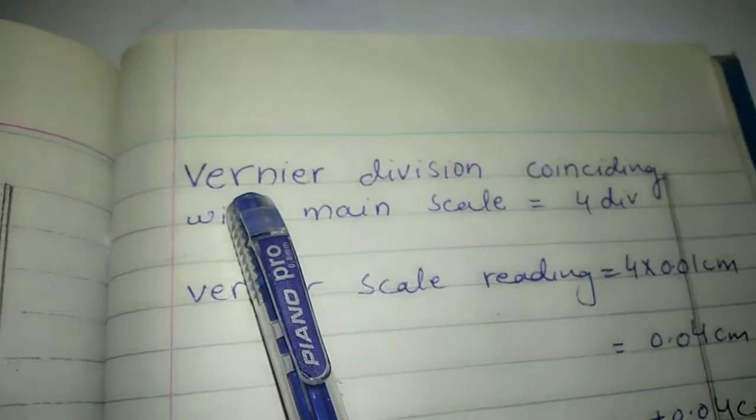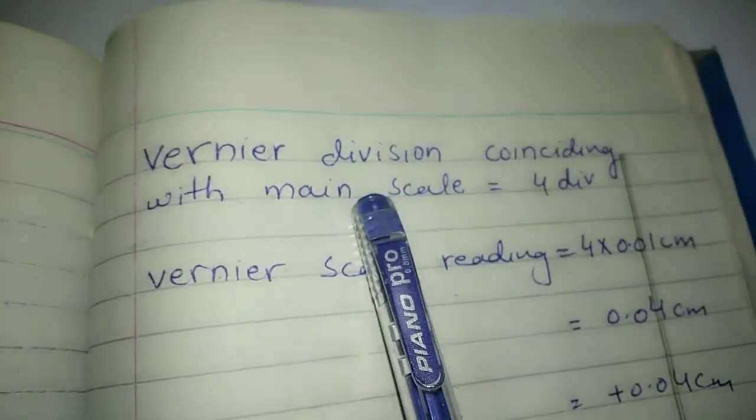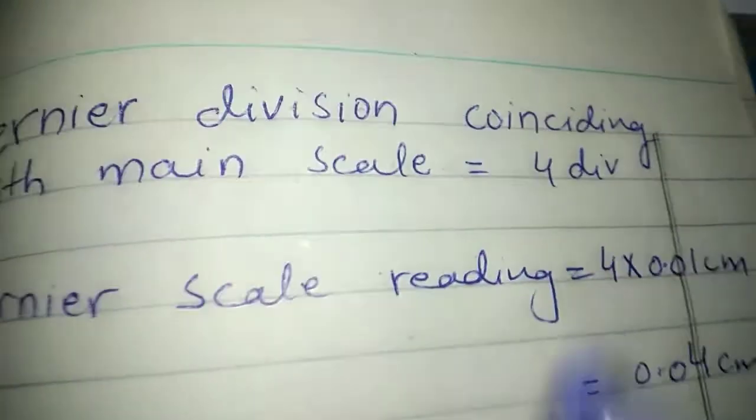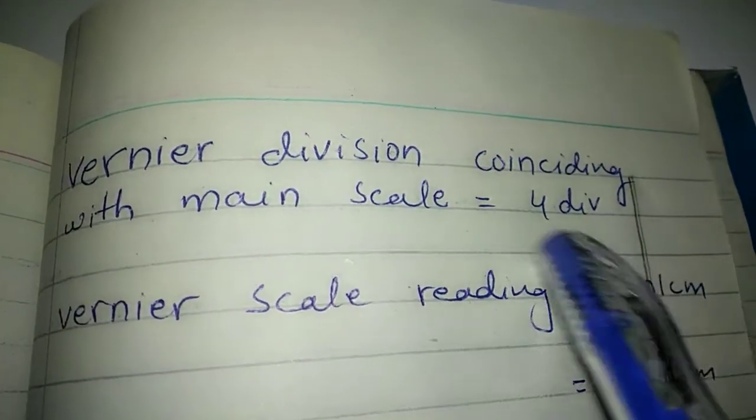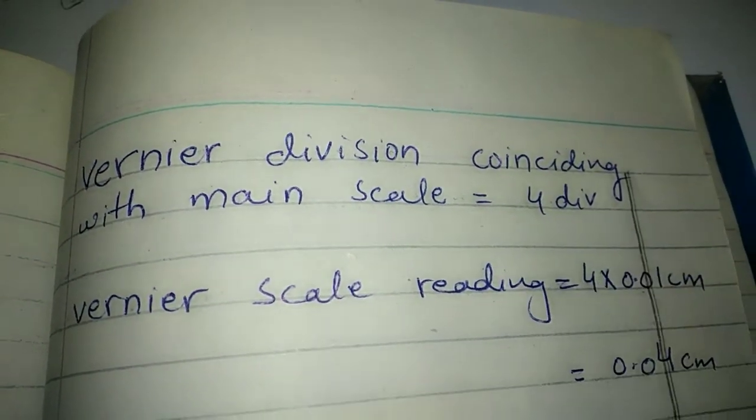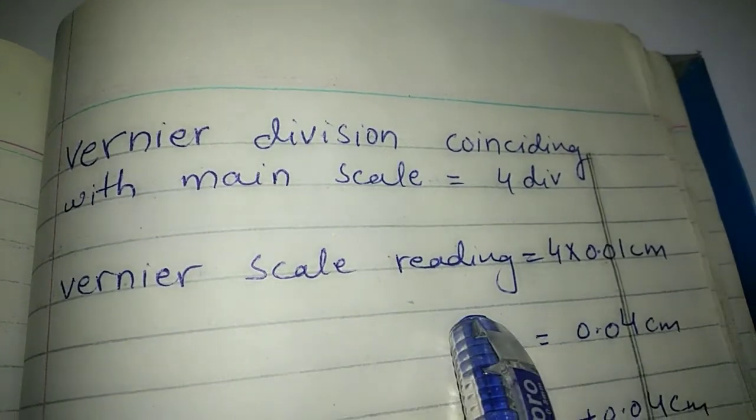This is vernier scale 4th division with main scale. Writing: vernier division coinciding with main scale equals 4 divisions. Then we find vernier scale reading.